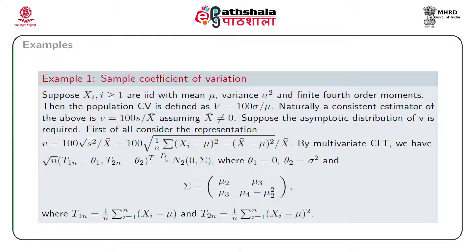Using our previous multivariate CLT, we have sqrt(n) multiplied by a vector with components T_1n minus theta_1 and T_2n minus theta_2, which is asymptotically bivariate normal with dispersion matrix sigma, where theta_1 equals 0 and theta_2 equals sigma squared. Sigma is a 2x2 matrix with first row having elements mu_2 and mu_3, and second row mu_3 and mu_4 minus mu_2 squared. Here T_1n is (1/n) * summation(x_i - mu) and T_2n is (1/n) * summation(x_i - mu)^2.